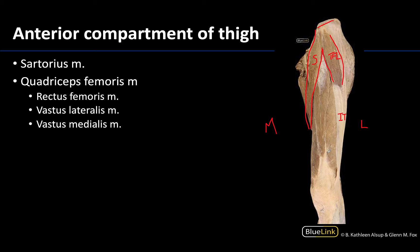Focusing in on the quadriceps region: this is a superficial dissection so we can only see three out of the four muscles. Running right down the middle is the rectus femoris — the straight muscle. On either side you'll have the vastus lateralis and medialis. You can really see how these muscle bellies end and then transition into the very thick quadriceps tendon. The patella would be right in this region, and from there you would have the patellar ligament.